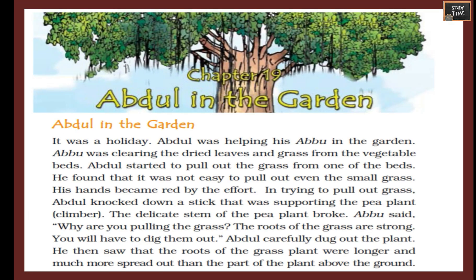It was a holiday, so Abdul was helping his Abu in the garden. Abu was clearing the dried leaves and grass from the vegetable beds. Abdul started to pull out the grass from one of the beds and found it was not easy to pull out even small grass — his hands became red from the effort. Abdul accidentally knocked down a stick supporting the pea plant climber, and the delicate stem of the pea plant broke.